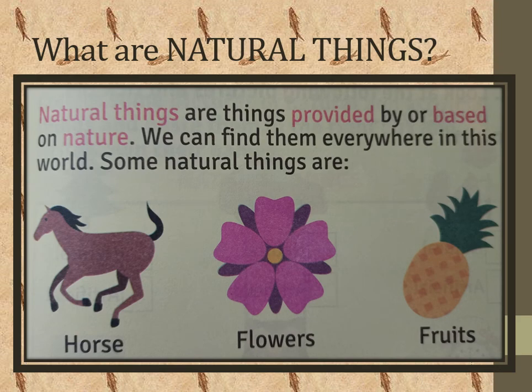First of all, we will talk about what are natural things. All the things which are made by Allah Almighty are called natural things. Natural things are things provided by or based on nature. We can find them everywhere in this world. Some natural things are horse, flowers, and fruits. You can see lots of natural things around the world.